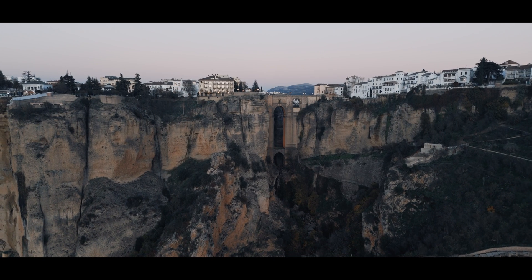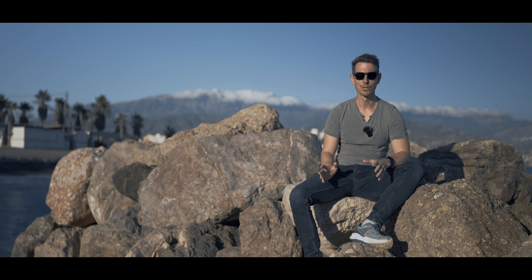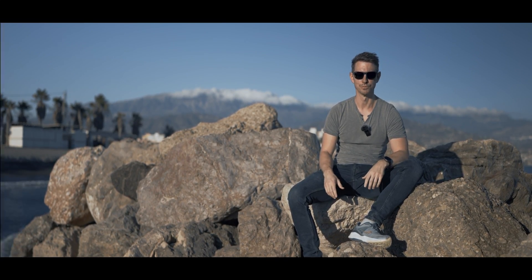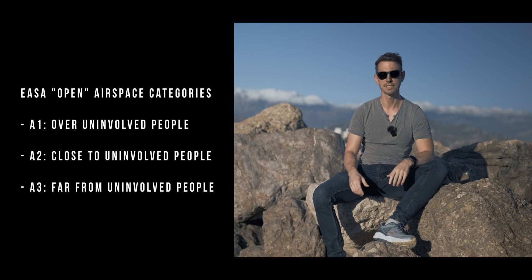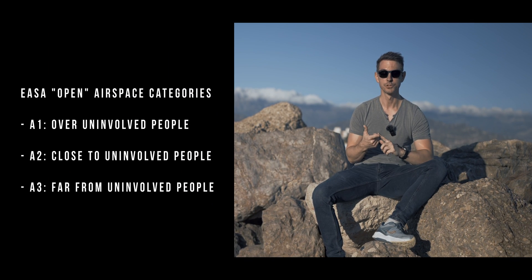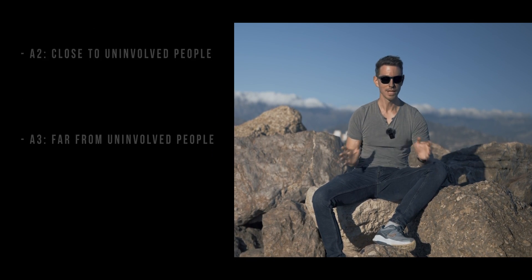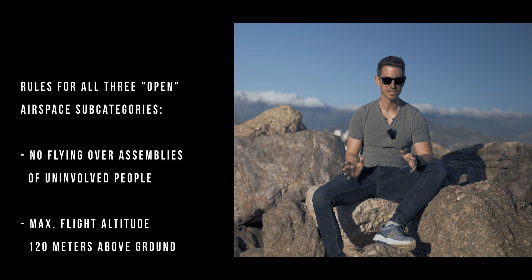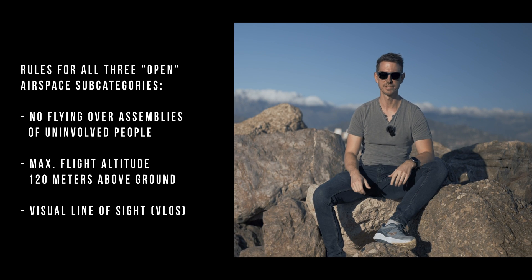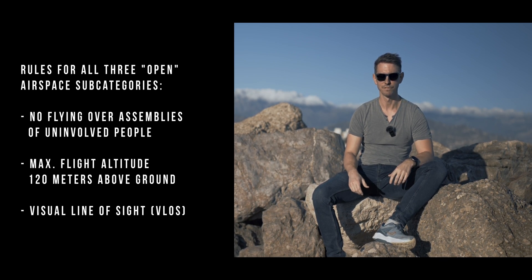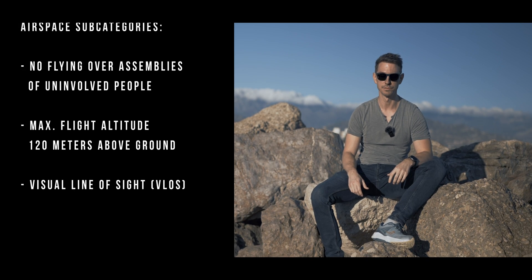Before we get into specific drone labels and models, you need to know which airspace categories there are. The open category covers 99% of consumer drones and consists of three subcategories: A1, A2, and A3. They all have in common that you must not fly over assemblies of uninvolved people and that you keep your flight altitude below 120 meters above ground.